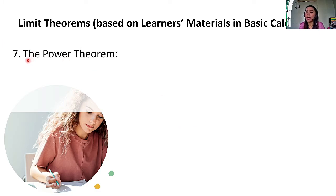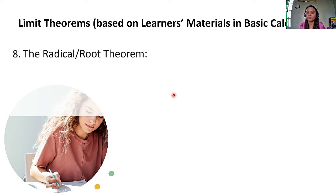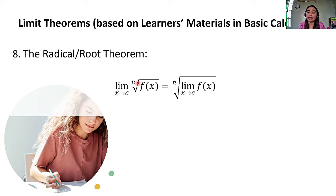Next, we also have the power theorem: the limit of F of X raised to P as X approaches C is equal to the limit of F of X as X approaches C raised to P, which equals L raised to P. We also have the radical or root theorem: the limit of the nth root of F of X as X approaches C is equal to the nth root of the limit of F of X as X approaches C, which equals the nth root of L.